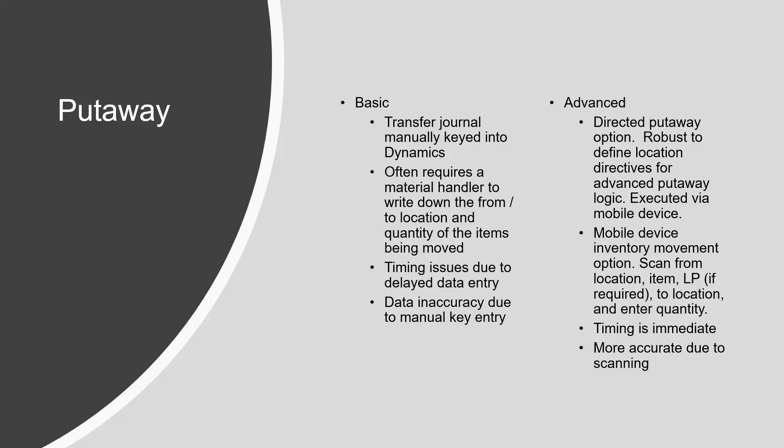Another part of advanced is put-away directives. We create automated instructions so that when this item or this kind of item comes in from a vendor, this is how we're going to put it away. And when stuff is coming off the production floor going into finished goods inventory, this is how it's going to be put away.